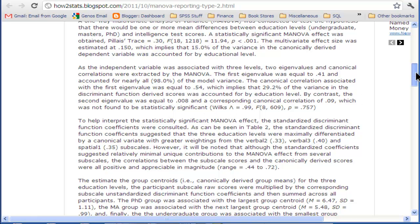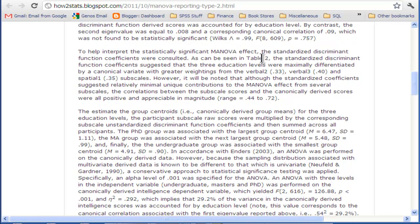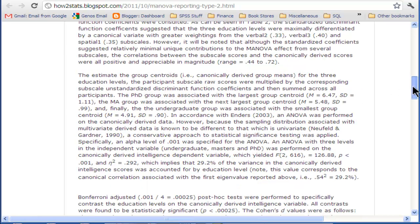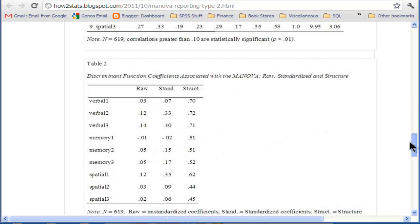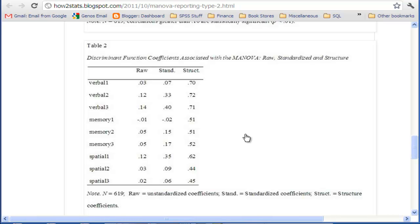Then I go into the discriminant function coefficients. To help interpret the statistically significant MANOVA effect, the standardized discriminant function coefficients were consulted. I put those into a table called Table 2. The first table is identical to the first table in the Type 1 approach to doing the MANOVA, and then I've got the discriminant function coefficients that help us interpret the nature of this super variable.